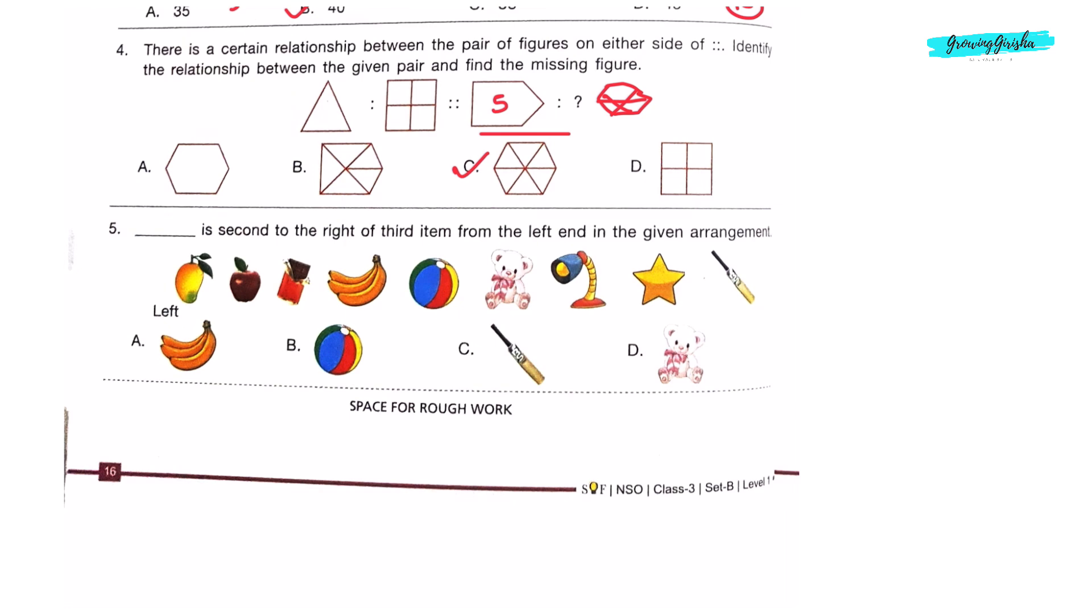Question 5: What is second to the right of third item from the left end in the given arrangement? Third item from the left end is chocolate. Second to the right from this chocolate is the ball. Ball is the correct answer, Option B.